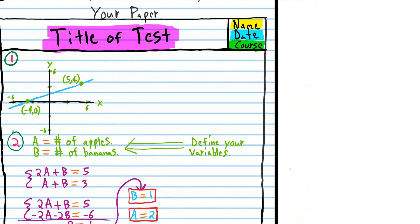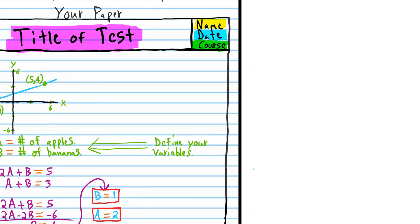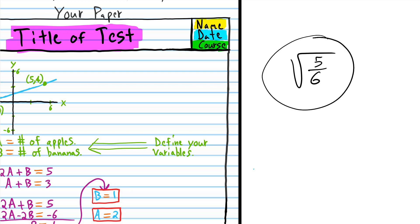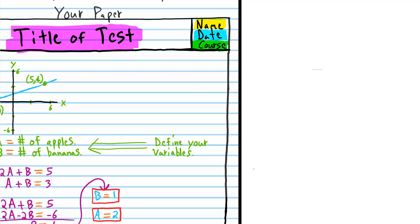In some of the equations, you're going to end up with a situation where you have the root of five over six, for example. I'm going to require you to rationalize the denominators. If you don't rationalize those denominators, you're going to lose one-fourth of the points for that particular problem, so rationalize those denominators.